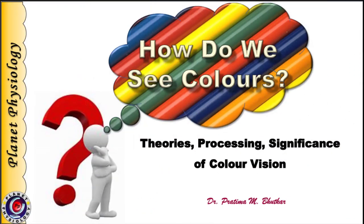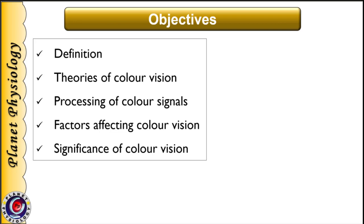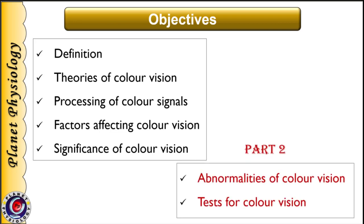Hi, this is Pratima from Planet Physiology. Today we shall learn about color vision. This topic is dealt under the following headings: definition, theories of color vision, processing of color signals, factors affecting color vision, and significance of color vision. In the second part, we shall study clinical aspects — abnormalities of color vision and tests for color vision.